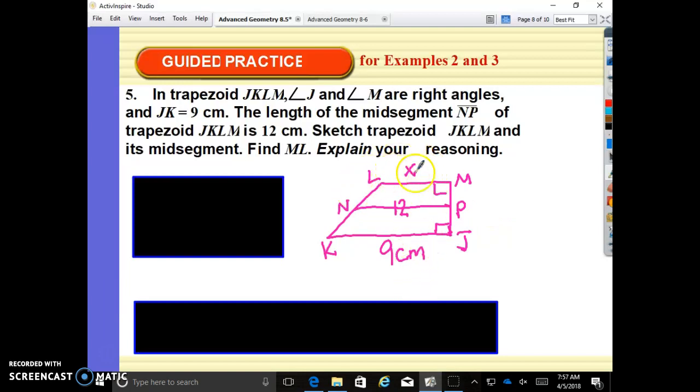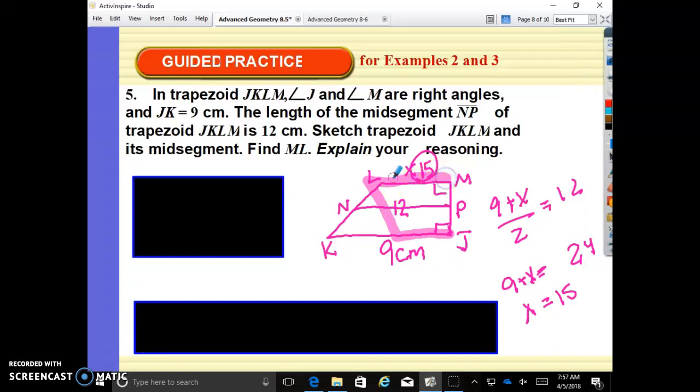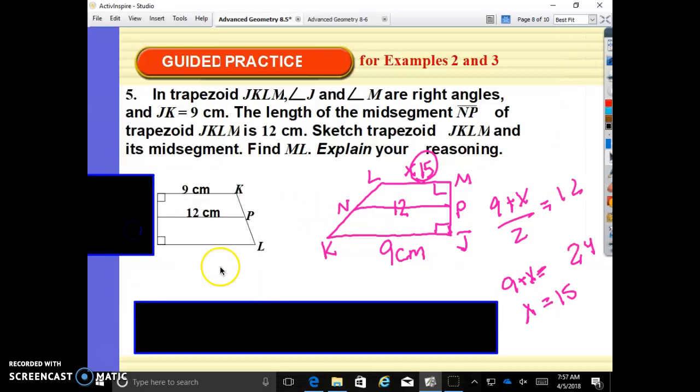Obviously it's not drawn to scale because this number has to be greater than 9. 9 is the smaller side. But it doesn't matter. 9 plus what divided by 2 is 12? Well, 12 times 2 is 24. 9 plus what is 24? 15. So 9 plus what divided by 2 is 12. 12 times 2 is 24. 9 plus what is 24? Subtract 9 from both sides. X is 15. 15 plus 9 divided by 2 is 12. In reality, we should have drawn it with the longer leg on top. But it's okay. It doesn't have to be drawn to scale.